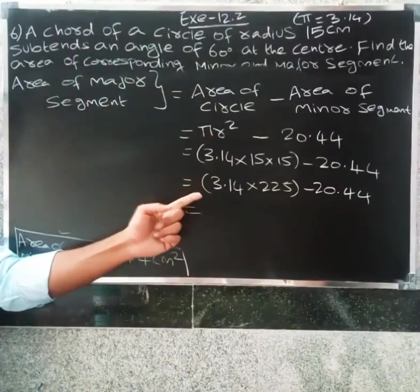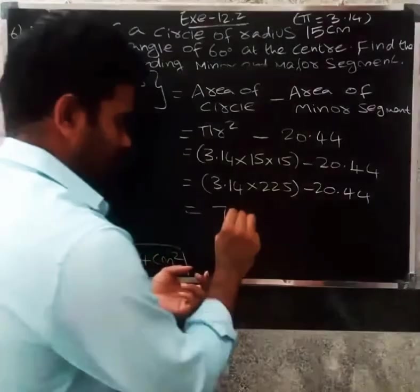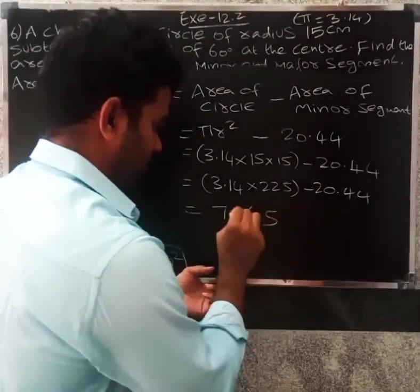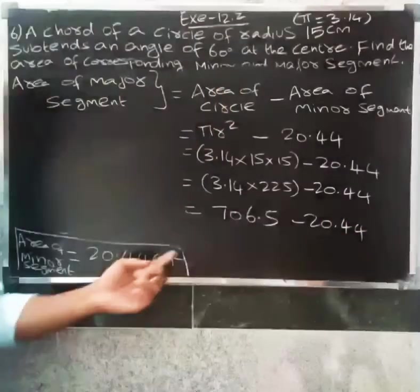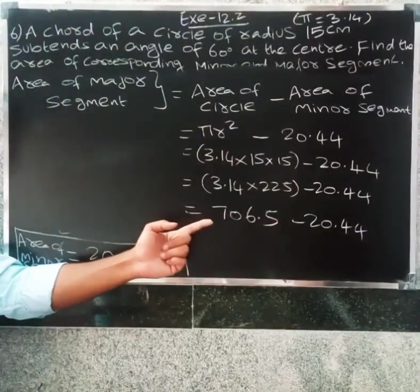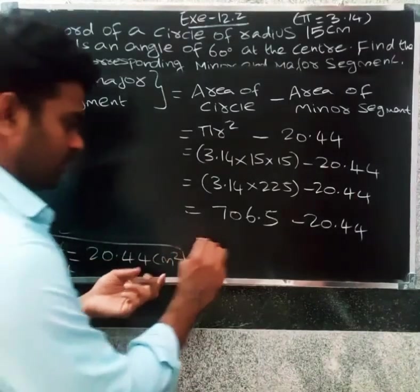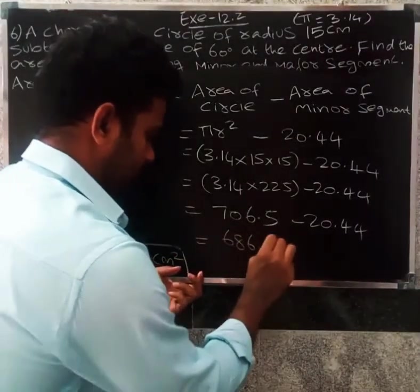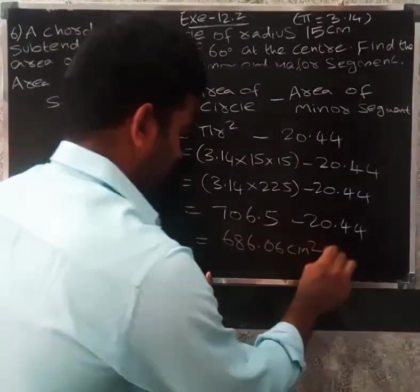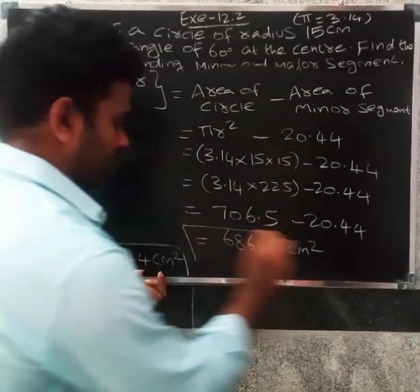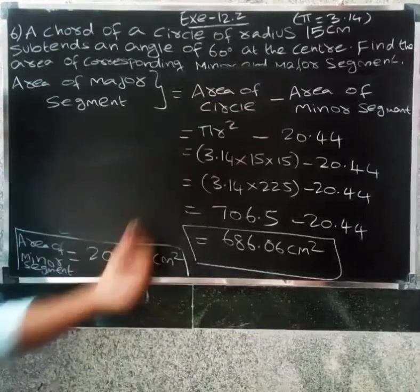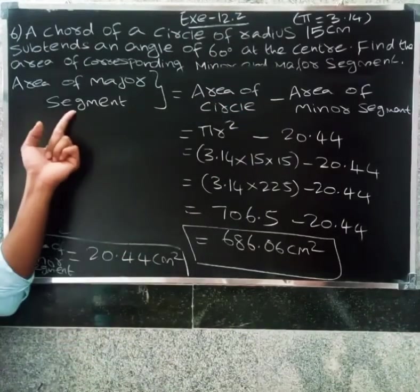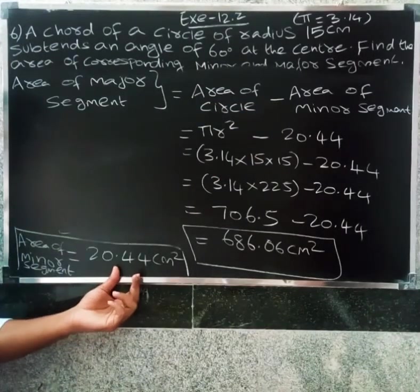3.14 into 225, multiplying we get 706.5 minus 20.44. So 706.5 minus 20.44 equals 686.06 centimeter squared. These are the area of major segment. Area of minor segment 20.44.